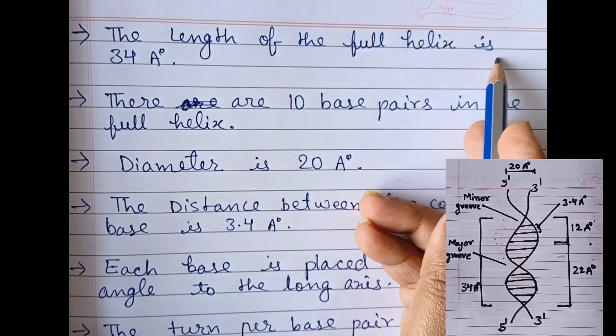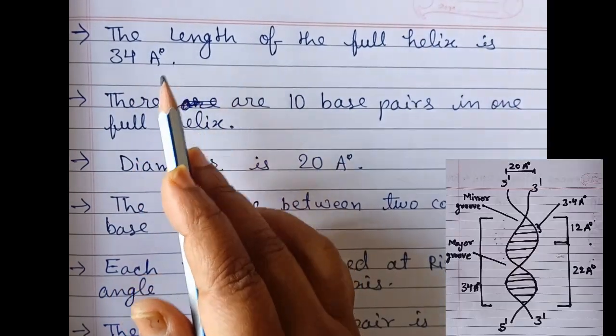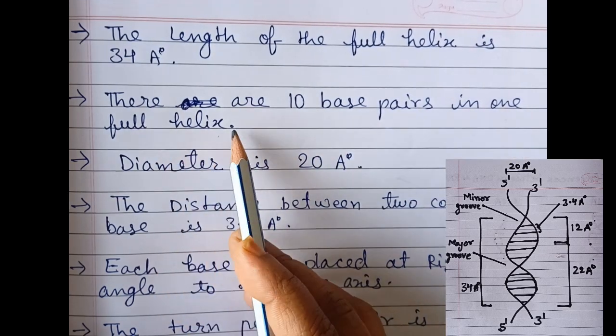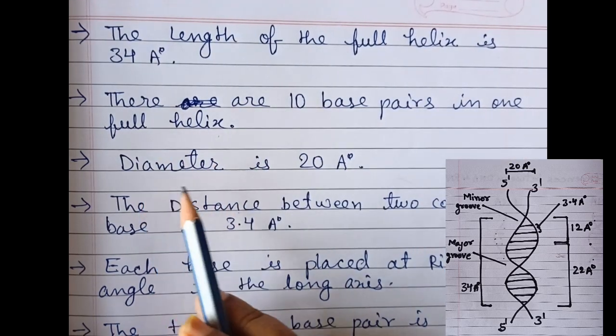The length of the full helix is 34 angstroms. There are 10 base pairs in one full helix. The diameter is 20 angstroms.